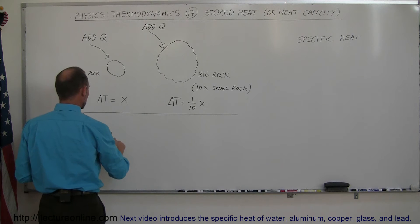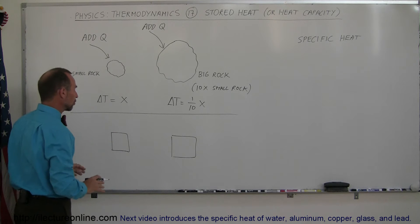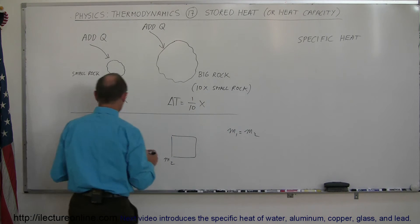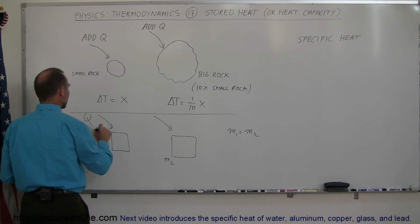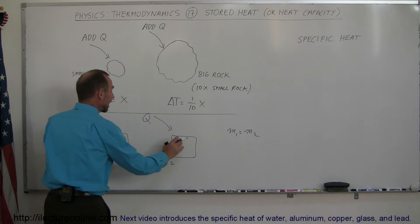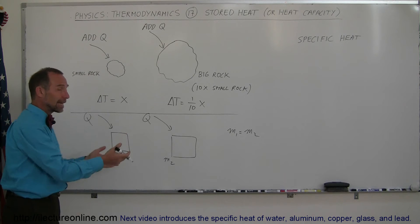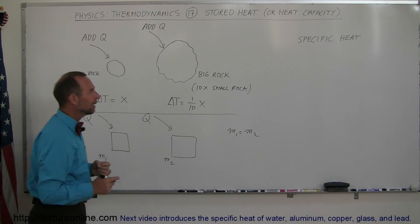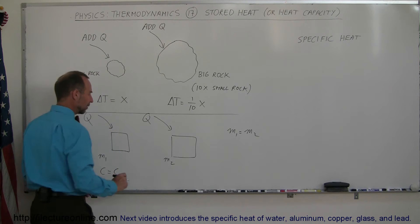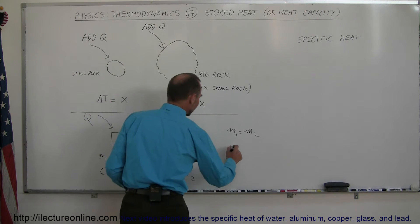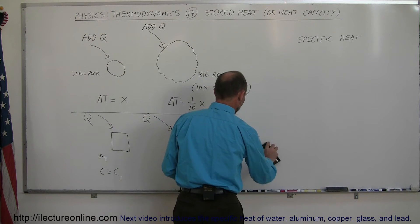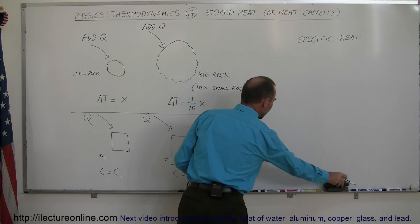Let's say we have two different materials where the masses are the same: m1 equals m2. If you didn't know anything else and added the same amount of heat to both, you'd expect the same temperature increase — and that would be true if they were the same material. But let's say the specific heat C1 and C2 are different, and C2 equals two times C1.